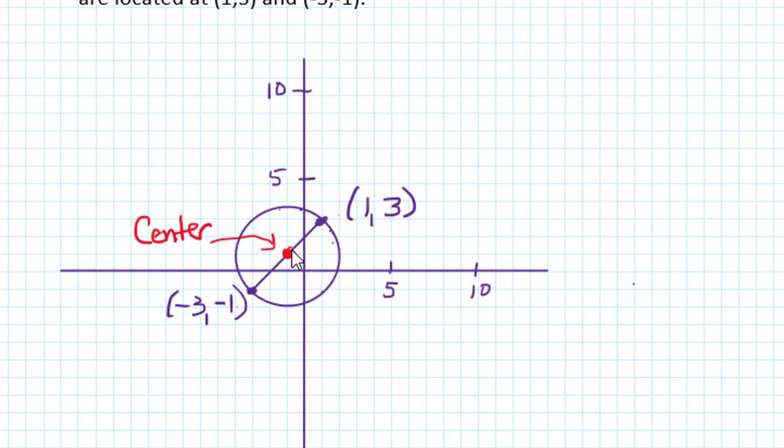That fixed distance between the center and every point on the circle is called the radius. When we extend a line segment from a point on the circle through the center, forming a radius, but then continue to the other side of the circle, that line segment that's twice the length is called the diameter.